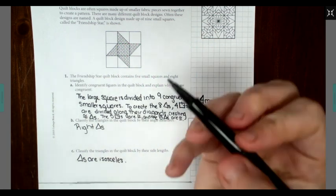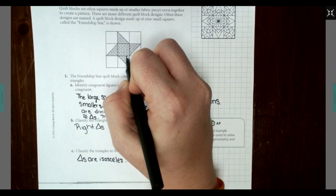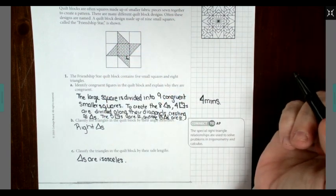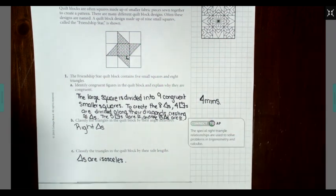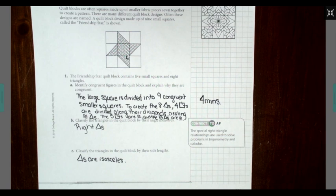Part B says classify the triangles in the quilt block. Well, if you look, each one of these are formed by a corner of a square, and we know that squares—the line segments are perpendicular and create right angles—so therefore our triangles are called right triangles. That's based on the angles in the center.